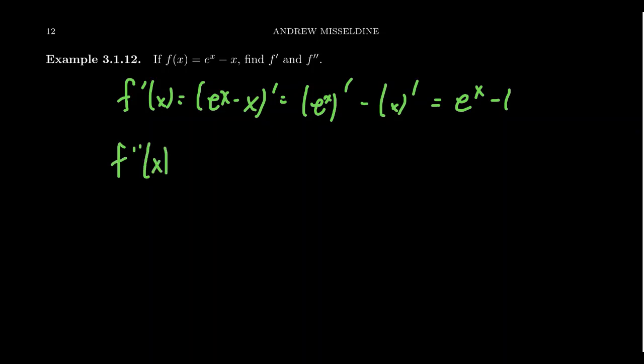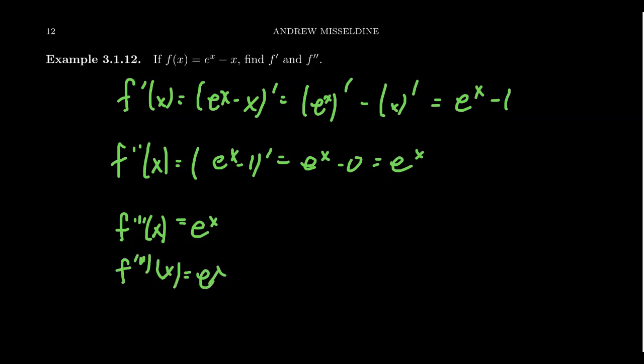If we then take the second derivative, we're going to take the derivative of the first derivative, which then gives us the derivative of e^x is e^x. The derivative of one is going to be zero. And so the derivative becomes e^x. And then we see after this that all higher derivatives, like the third derivative, will be e^x. And all higher derivatives are likewise going to be e^x. In which case, it's a very simple calculation. The derivative of e^x is always itself.